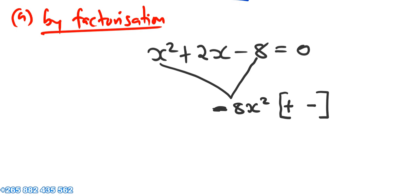It depends on the factors of 8 which can give us 2. Definitively, it's 2 and 4 — 2 times 4 is 8. Now, it has a negative sign. The factors here: one of them is negative and the other is positive, giving us the required middle term.